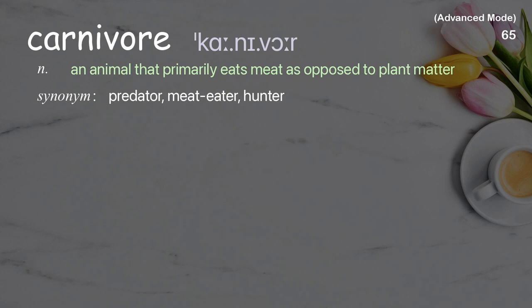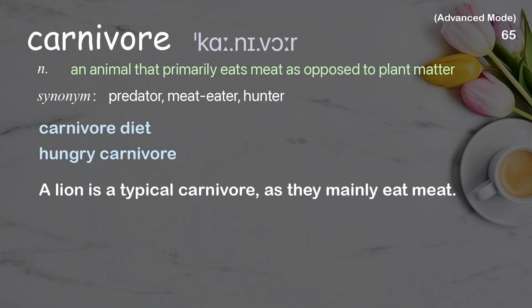Carnivore: An animal that primarily eats meat as opposed to plant matter. Examples: Carnivore diet, Hungry carnivore. A lion is a typical carnivore, as they mainly eat meat.